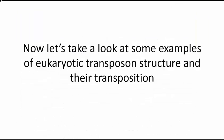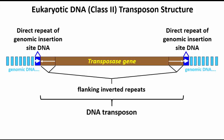Now let's take a look at some examples of eukaryotic transposon structure and mechanisms of transposition. Active eukaryotic class 2, or DNA, transposons share key features with the bacterial IS and TN elements, as well as complex transposons in bacteria, including flanking inverted repeats and genes required for transposition — for example, the transposase gene. Like the bacterial elements, they also leave a pair of flanking direct repeats of host cell DNA at the insertion site. Note that the ends of eukaryotic transposons do not include any independent mobile elements analogous to the bacterial IS elements.